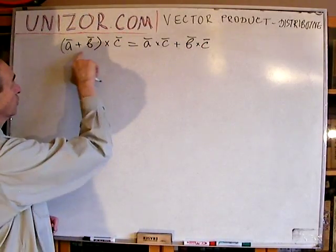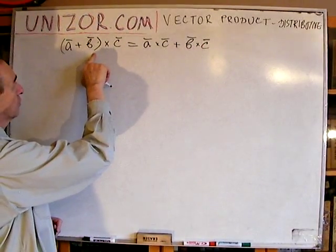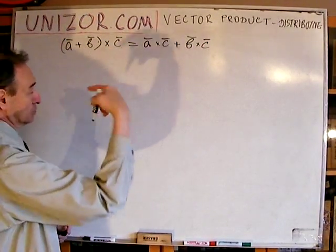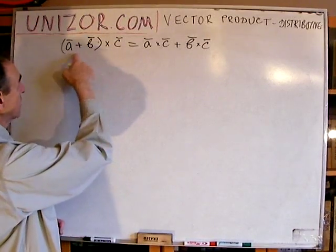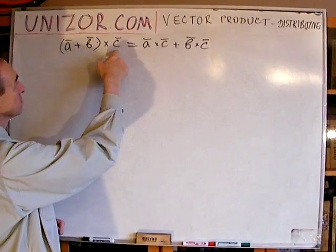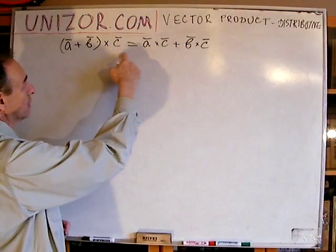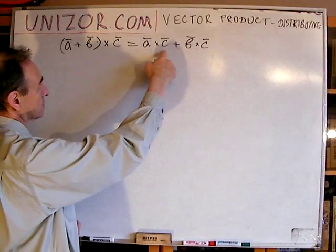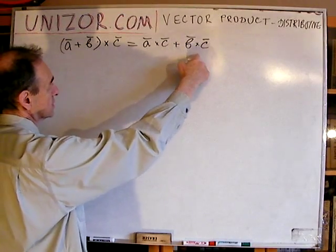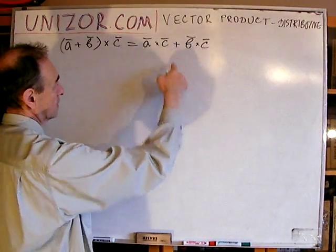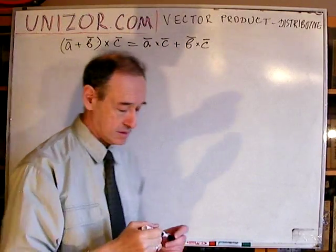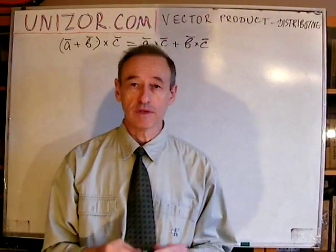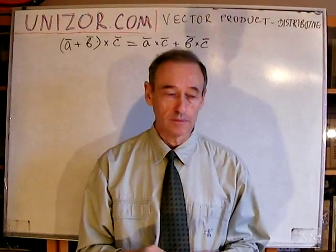If you would like to have the vector product of some two vectors by the third one, then you multiply the first one, the second one, and then add the results. That's the typical form of the distributive law.